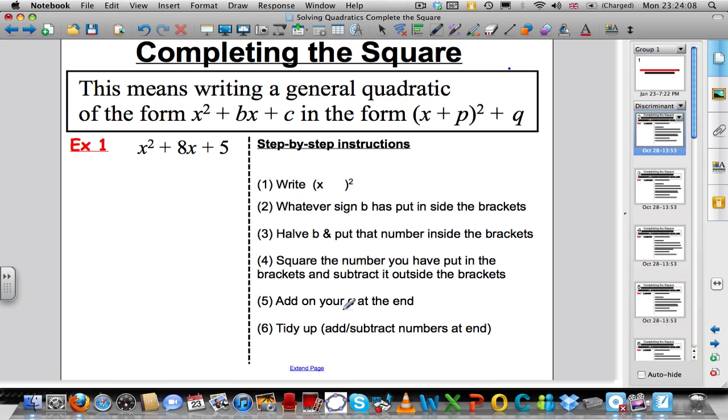Here's a step-by-step instructions on how to complete the square. The first thing I will say is write your x in the brackets, that's how you want it in that form, x plus something in the brackets, and you want a squared. Whatever the sign is in front of the b, the sign in front of the 8 here is a plus, put a plus in the brackets. Whatever the number b is, it's 8, halve that number and put it also inside the brackets.